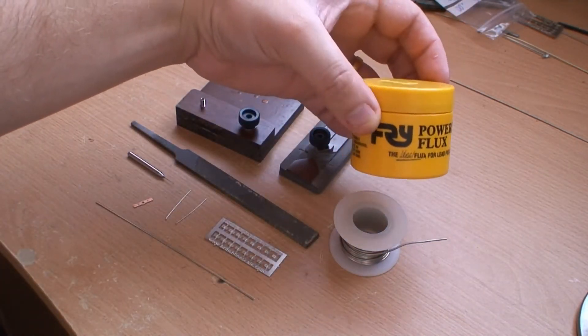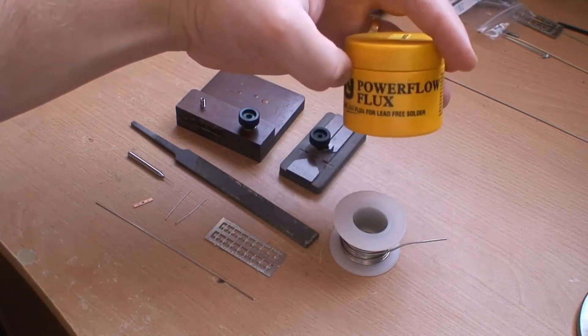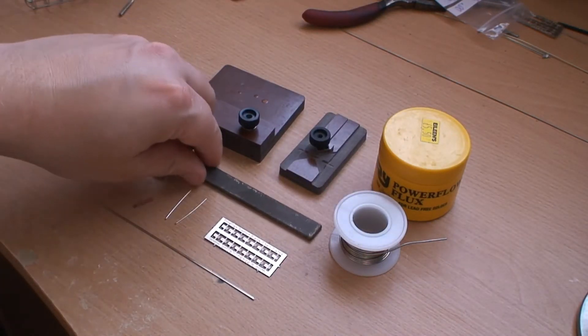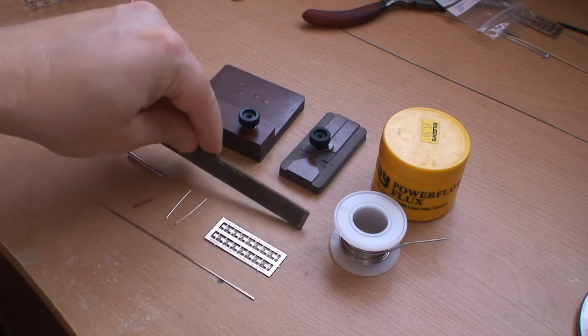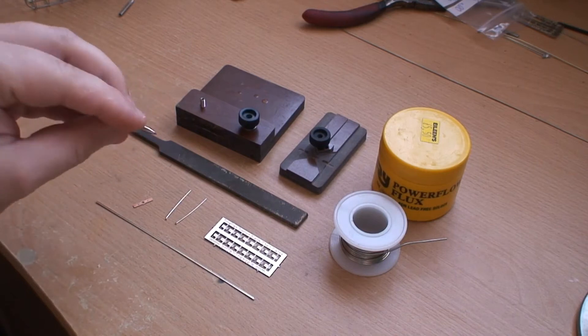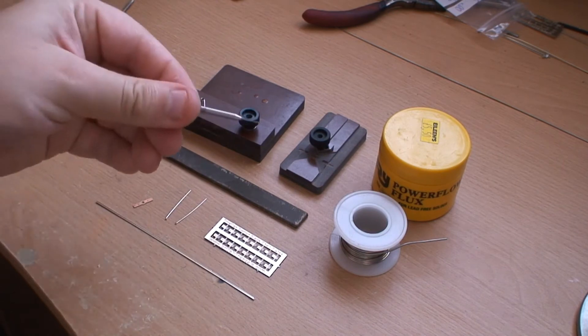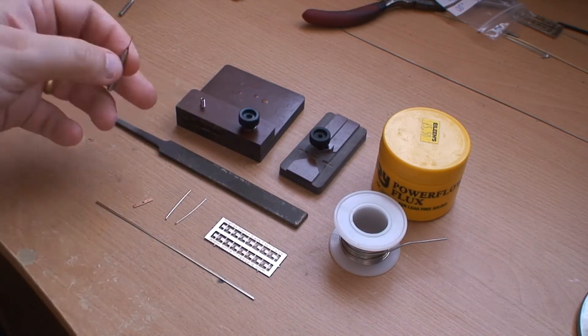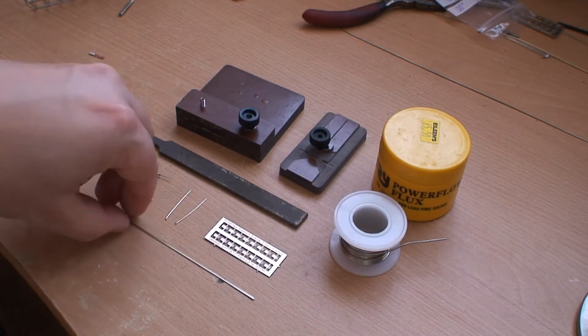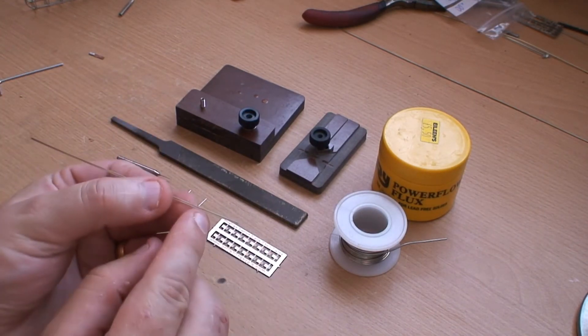You'll need flux—I'm using Fry Power Flow flux, which is good for lead-free solder. You also need a file for obviously filing the switchblade and cleaning up after soldering, and you'll also need a 0.4-millimeter drill to actually clear out the hole on the chair plate. These will be provided on my website, britishfinescale.com.